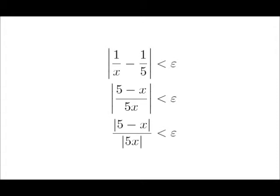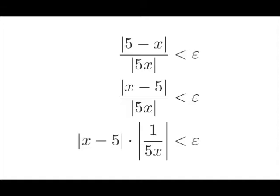We start with the absolute value of 1 over x minus 1 fifth being less than some epsilon. We can then use basic algebra to combine the difference of fractions to a single fraction, 5 minus x over 5x. Then we can substitute a fraction of absolute values for an absolute value of a fraction. Absolute values of differences are commutative, so we can change 5 minus x to x minus 5, and then rewrite the quotient as the absolute value of x minus 5 times the absolute value of 1 over 5x.